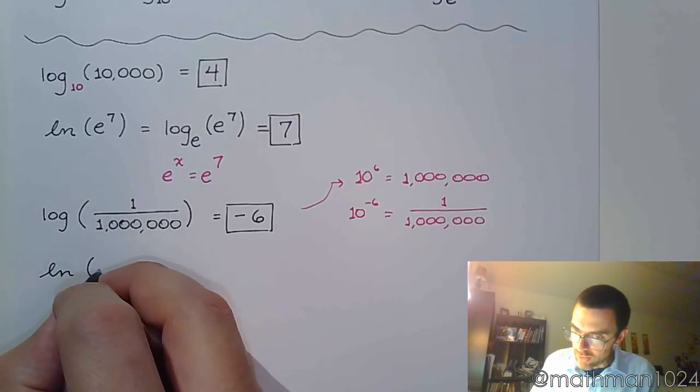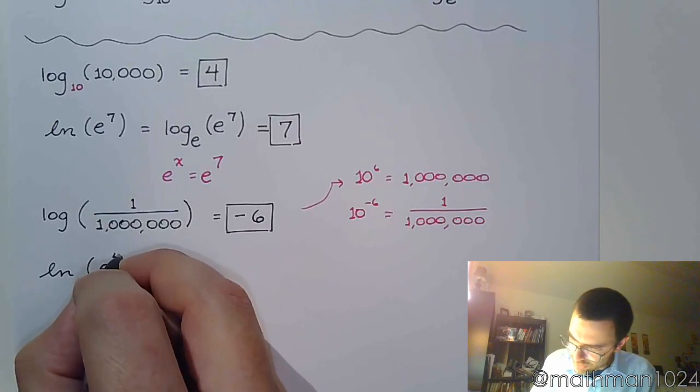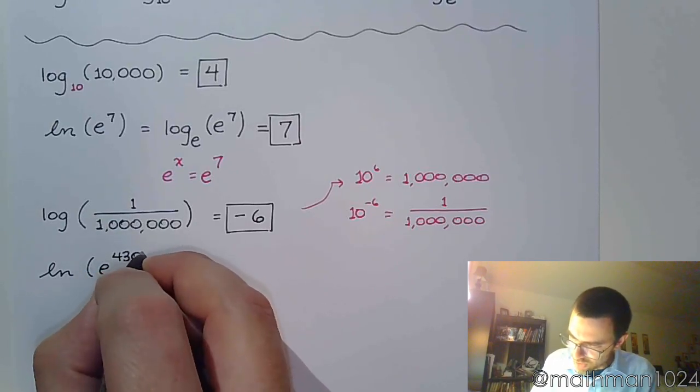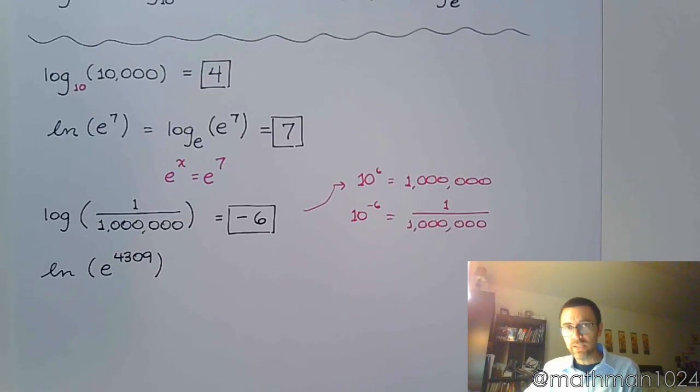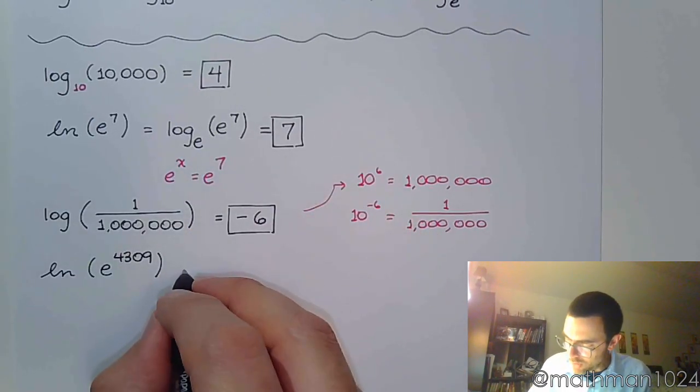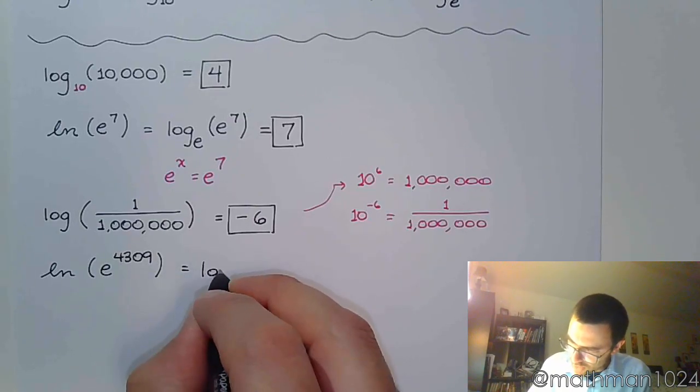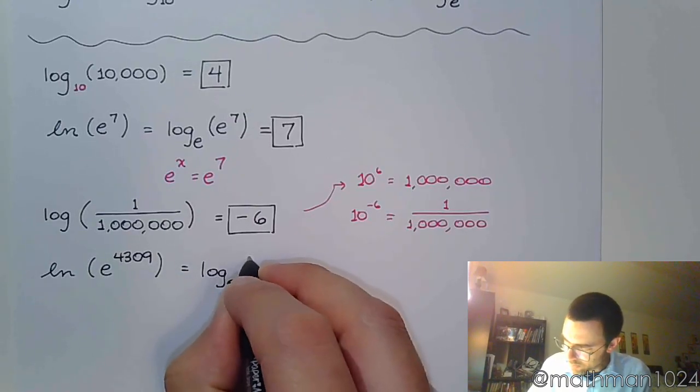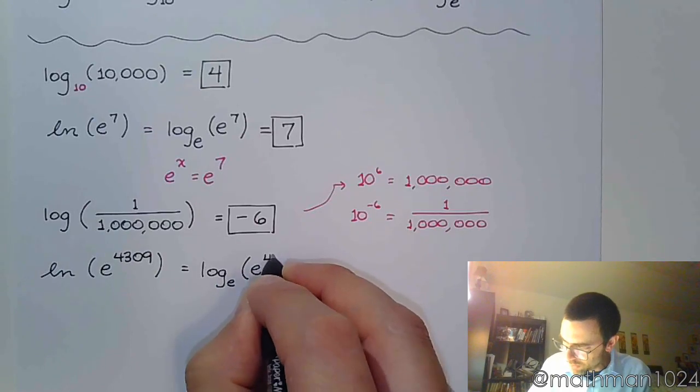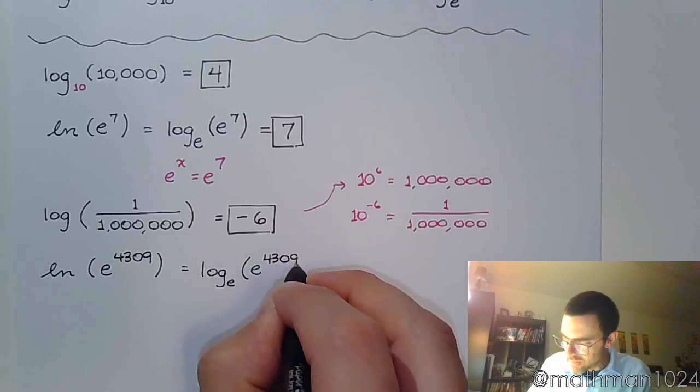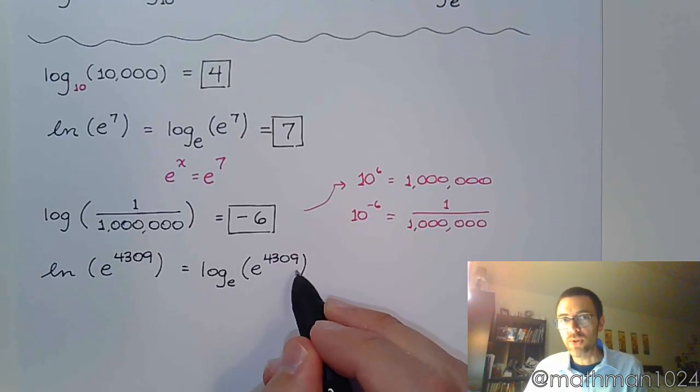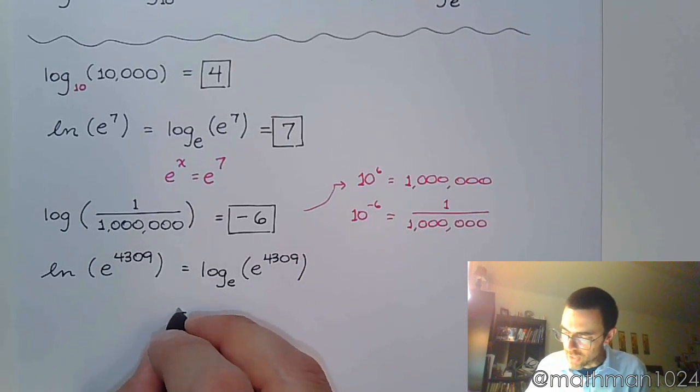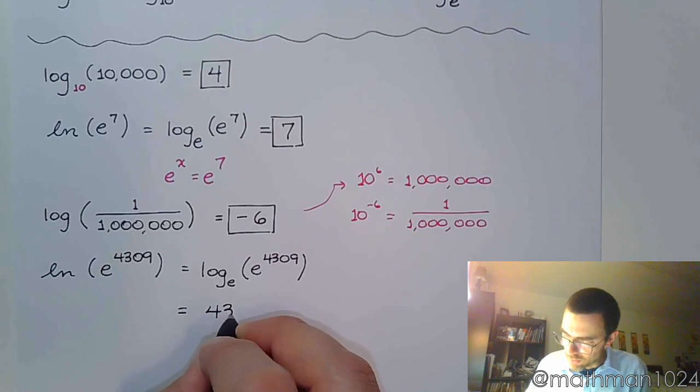Natural log of e to the 4,309th power. Well, you're going to see that it's very much like the last problem that we did up here, where I could rewrite this and say log base e of e to the 4,309th power. So what power of e gives you e to the 4,309? Well, you guessed it. 4,309.